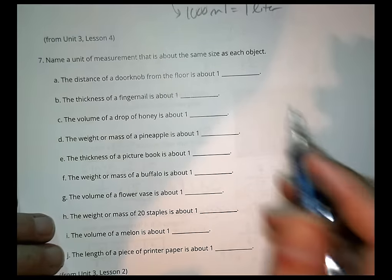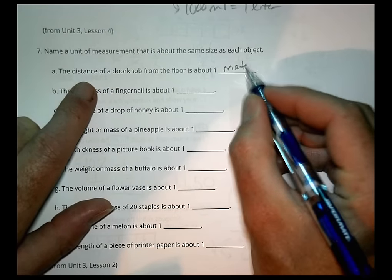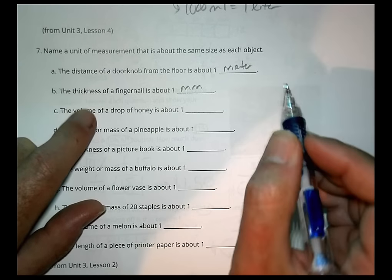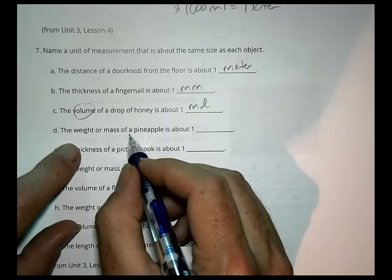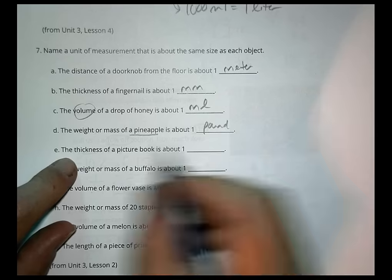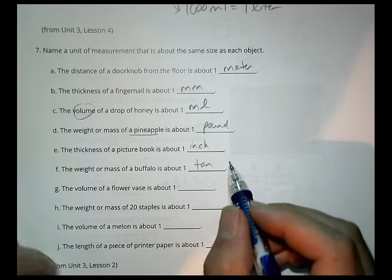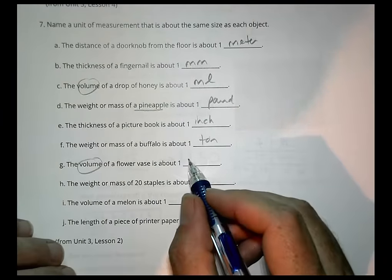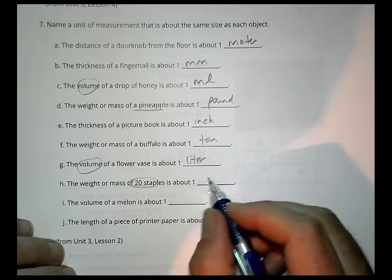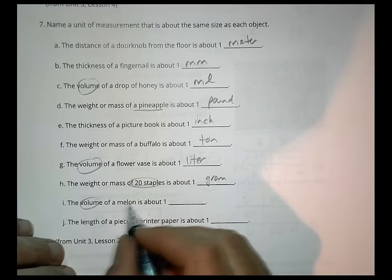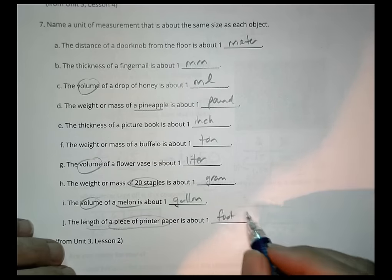Finally, the last one here. We're going to name a unit, a measurement that's about the same size as each object here. The distance of a doorknob to the floor is about a meter. The thickness of a fingernail is about a millimeter. The volume of a drop of honey is probably a milliliter. The weight or mass of a pineapple is about one pound. The thickness of a picture book is about one inch. The weight or mass of a buffalo is probably about one ton. The volume of a flower vase is about one liter. The weight or mass of 20 staples is maybe one gram. The volume of a melon is about one gallon. The length of a piece of printer paper is about one foot.